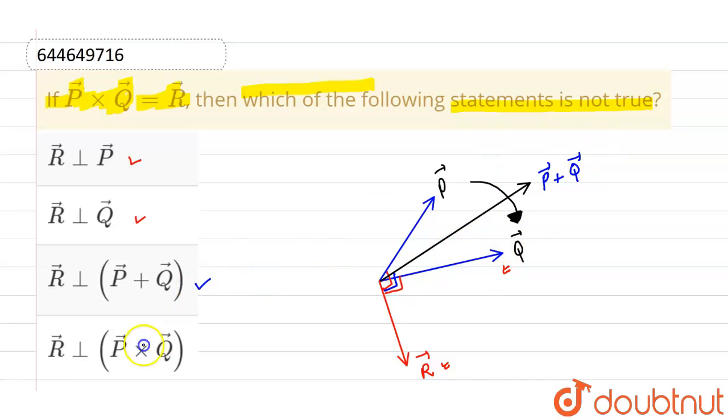Hence, the only false option from these is fourth. Now, why is this false? Because P cross Q-vector is nothing but R-vector and R-vector cannot be perpendicular to itself. It can be parallel to itself but R-vector is not perpendicular to itself. So this is a false statement.